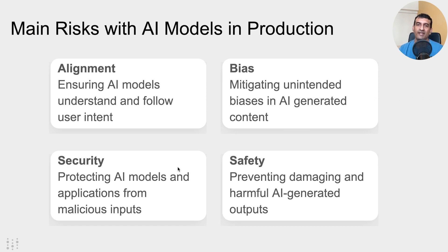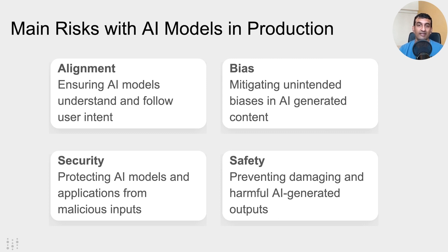Let's go back to some of the basics on what are the risks with putting AI models in production. The most obvious one is alignment — if you are building an app to get the AI model to do something, it needs to actually do that. Simple example: we're building a model that's doing SQL query generation. You want to make sure that the model is actually responding to the user with a real SQL query and nothing else. There's also obviously a problem of bias, which is certainly not new to AI-generated content, but it's certainly going to accelerate. Even back in the machine learning days, bias has always been an issue.